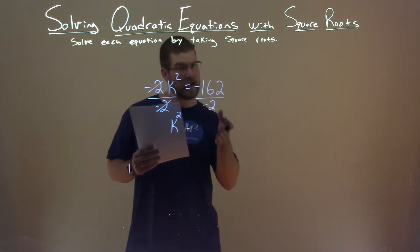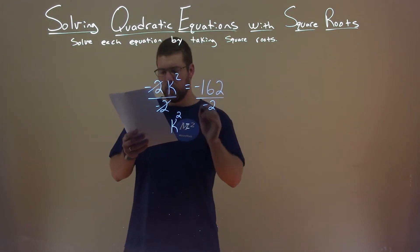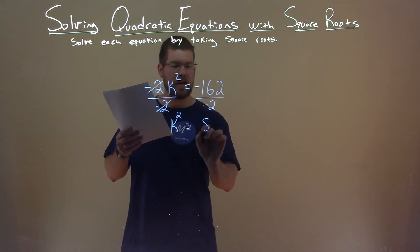Now remember, negative divided by a negative is a positive, so 162 divided by 2 is 81.